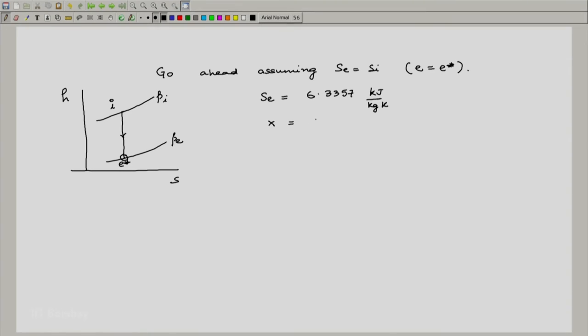This means we will need to find our dryness fraction here x. We will use 6.3357 and subtract the SF at this point, which is 2.1381, we will look at the tables for 1 mega Pascal and divide by SFG which is 4.4470 and this will turn out to be 0.9439. That means that e star would have been a more drier state than what was given in the problem.